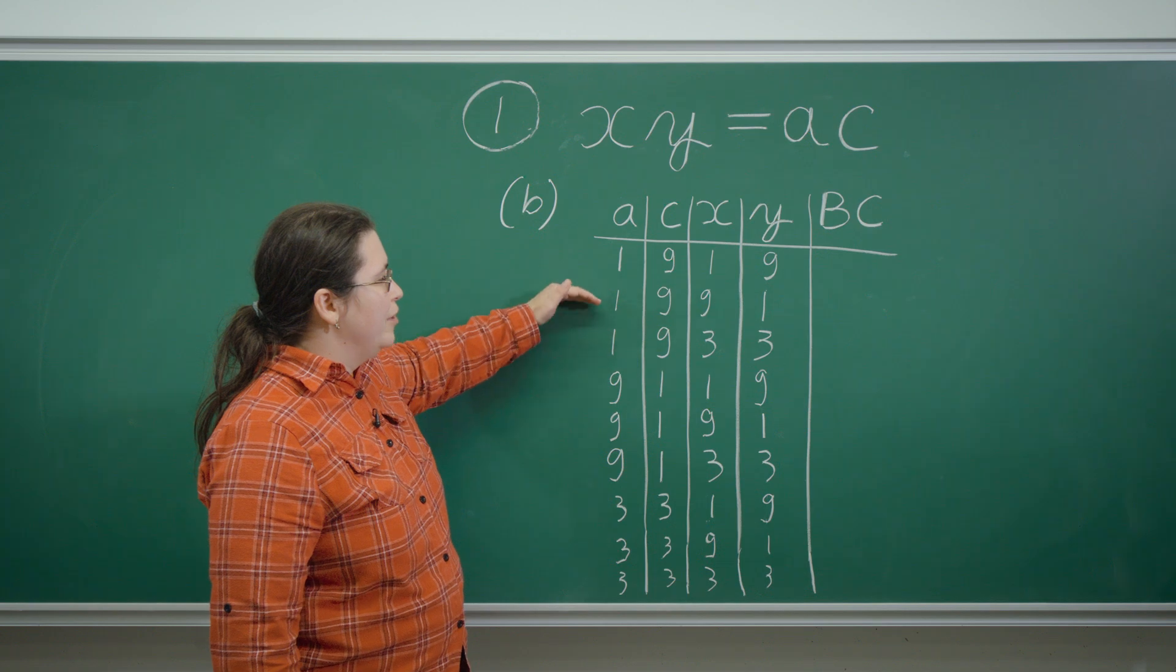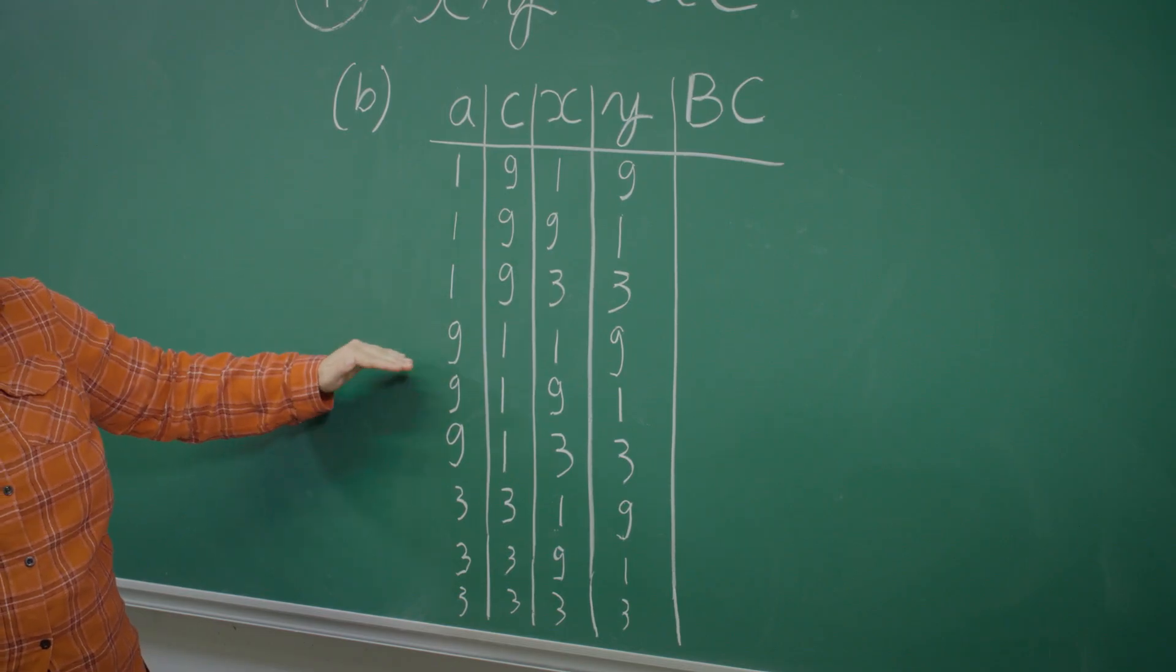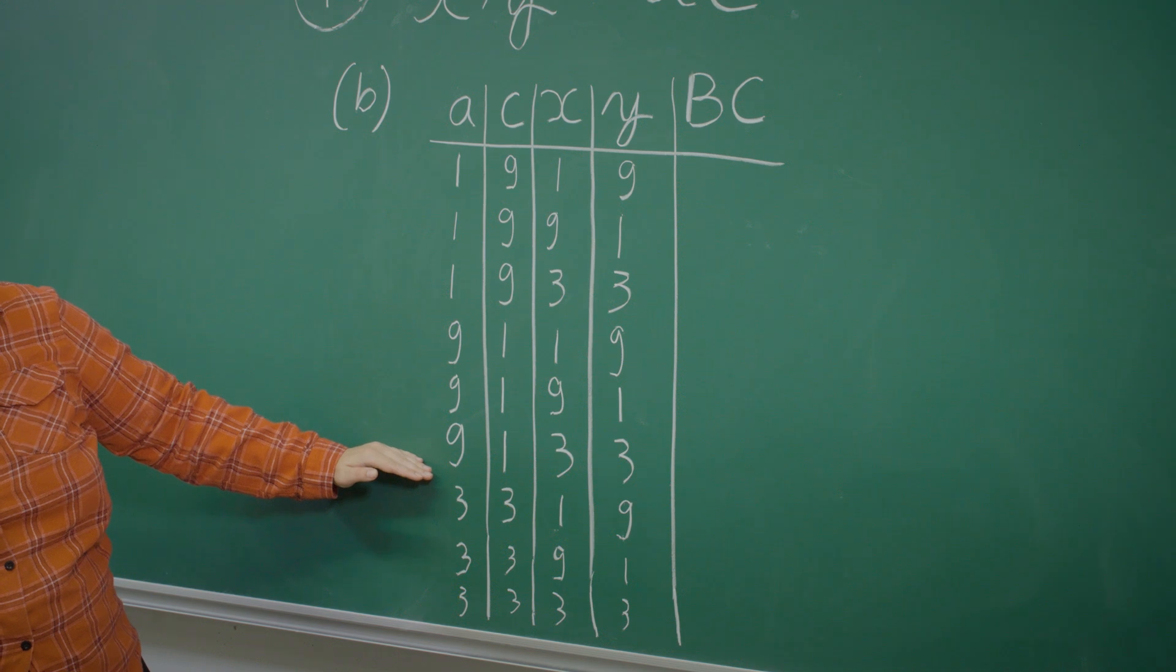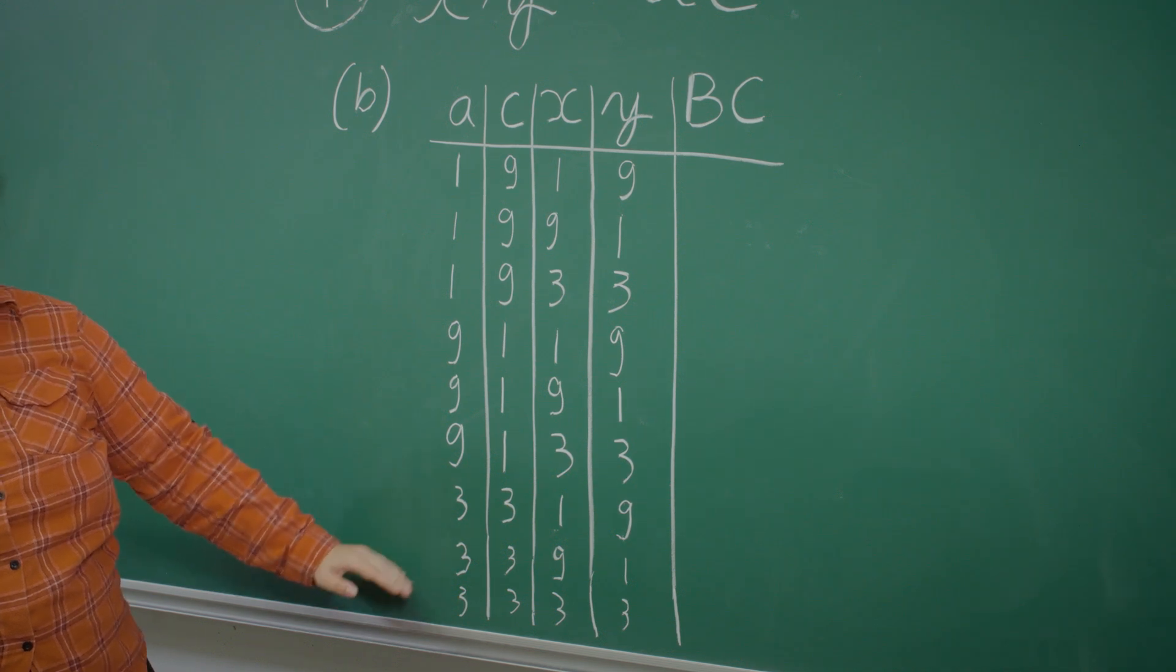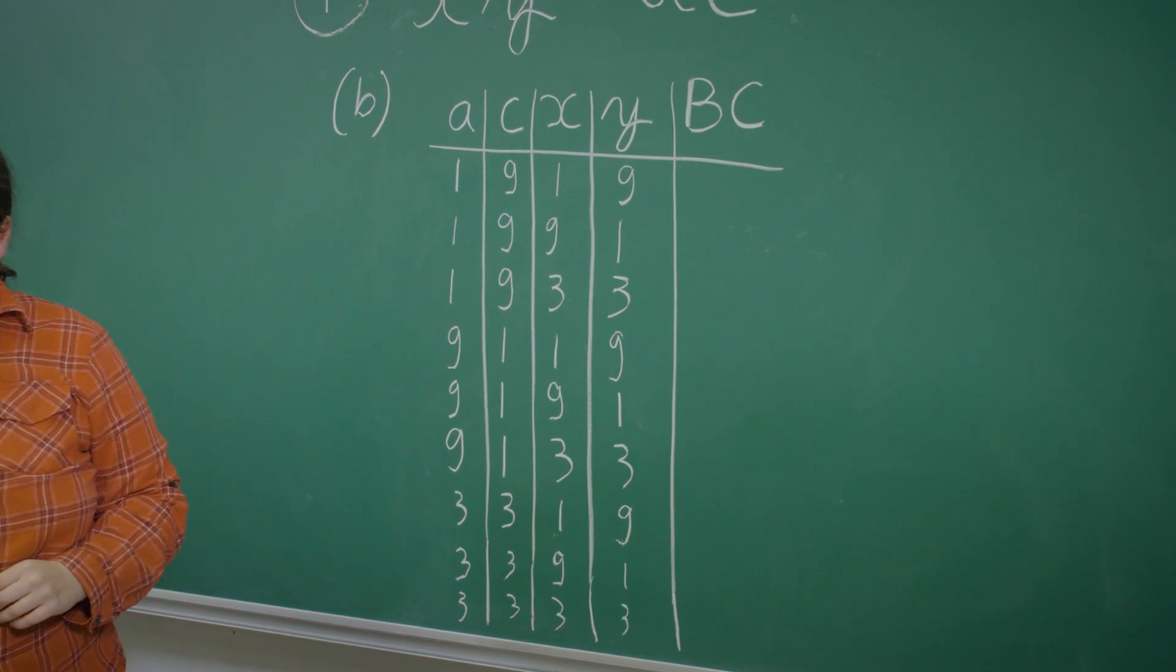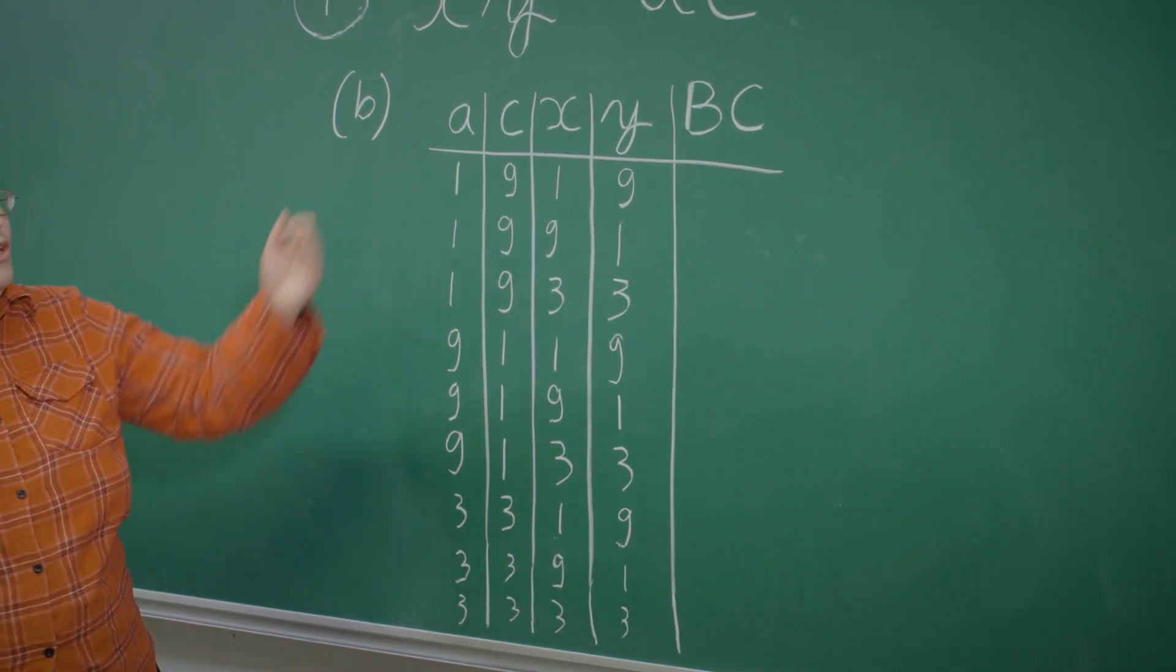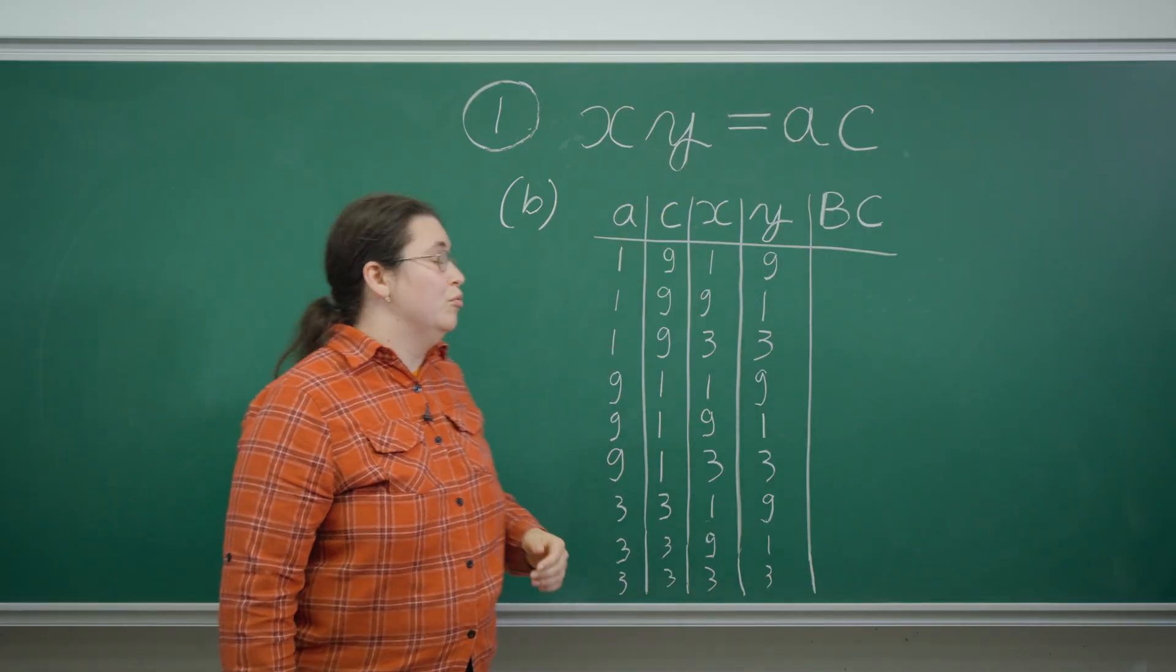As we've systematically gone through the possible positive integers that multiply together to give 9 for both AC and XY. And indeed all these constructions will work because for all of them this equation will hold.